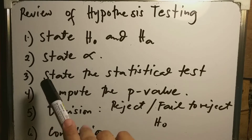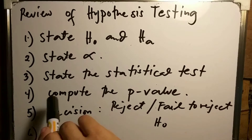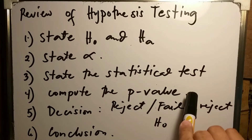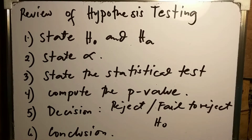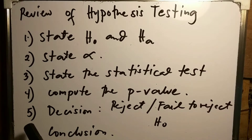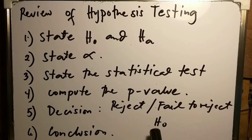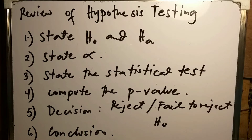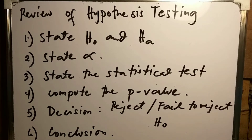For the third step, state the statistical test. For number four, compute the p-value — we will use statistical software to compute the p-value conveniently. For number five, the decision is to reject or fail to reject H0, focusing on the null hypothesis. Lastly, for the conclusion, we state a statement in which we have evidence of rejecting or failing to reject the claim.